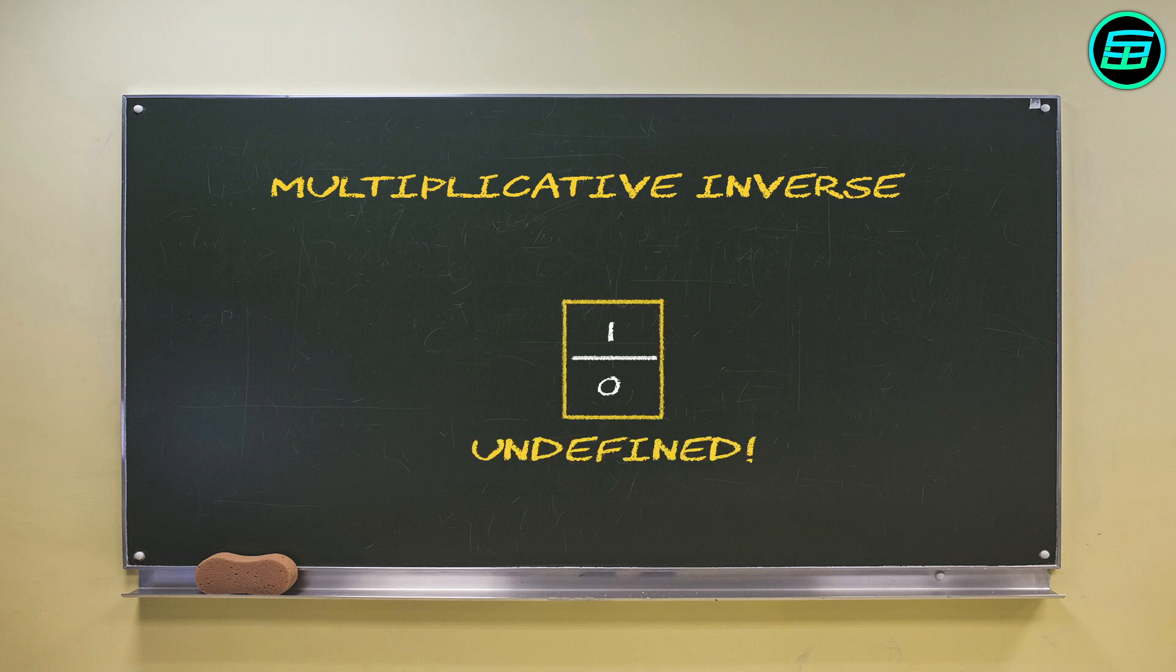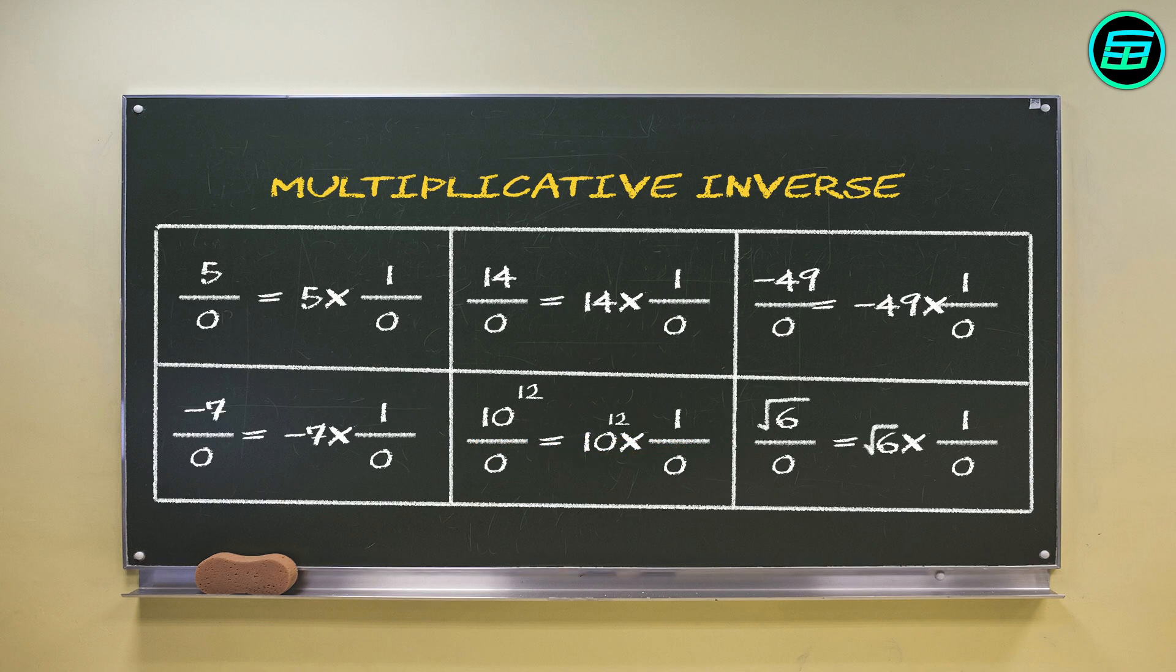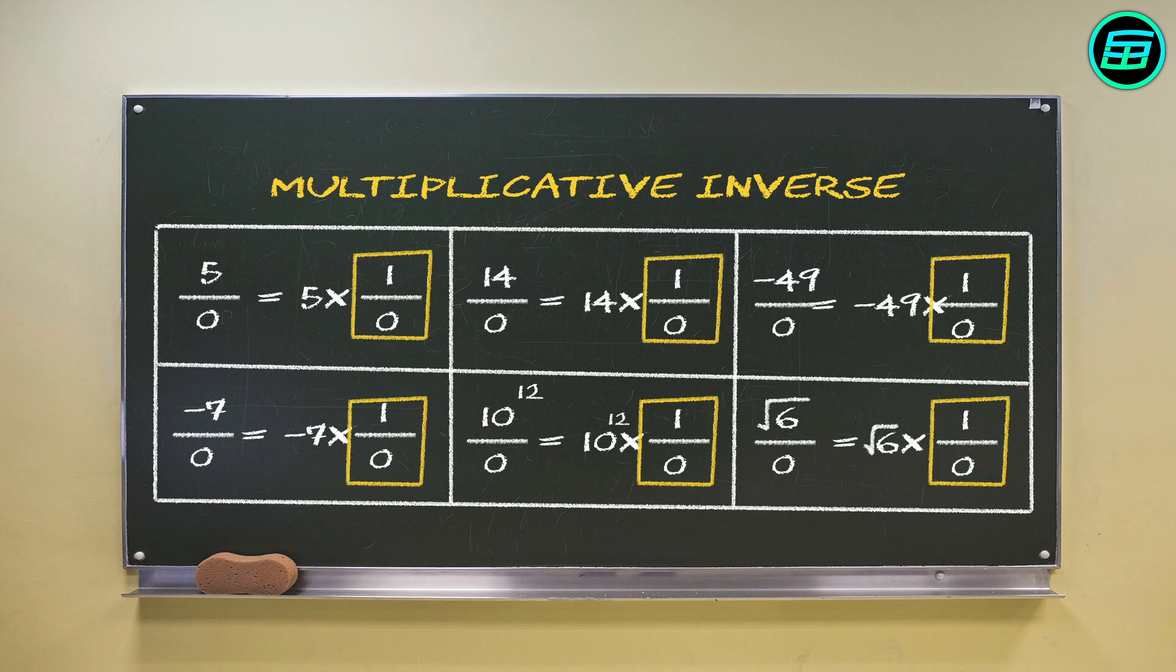If we write the operations of dividing numbers by 0, we get the following. Because 1 over 0 is undefined, all these results are undefined.